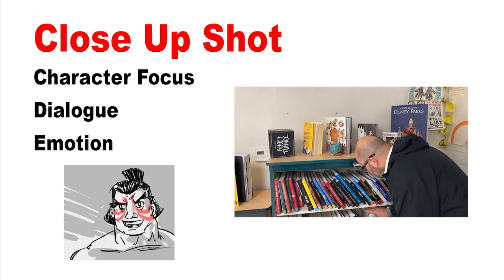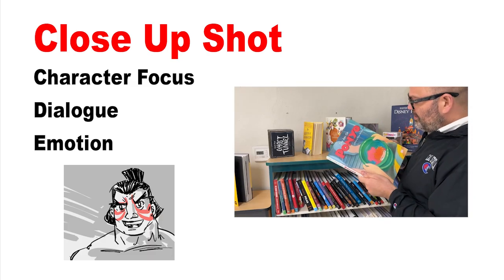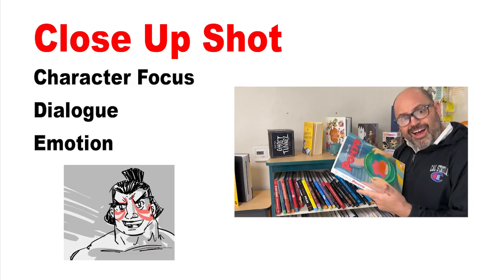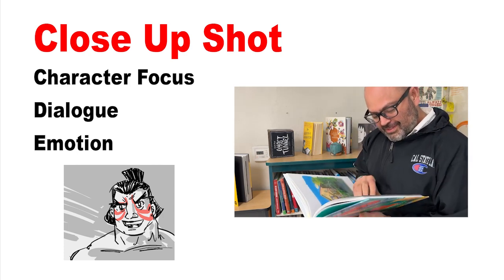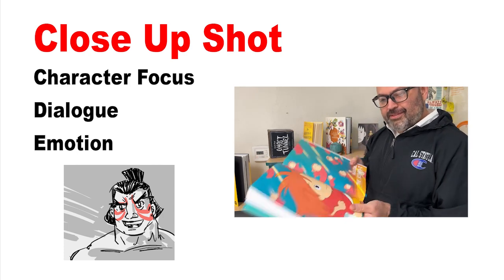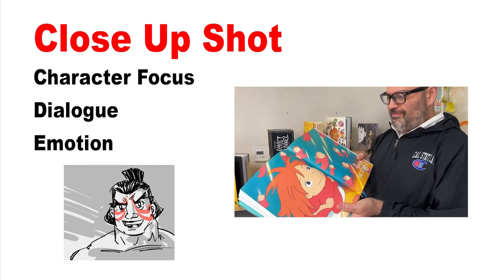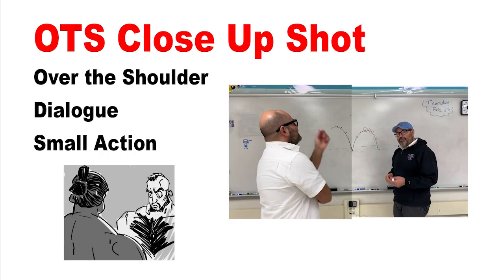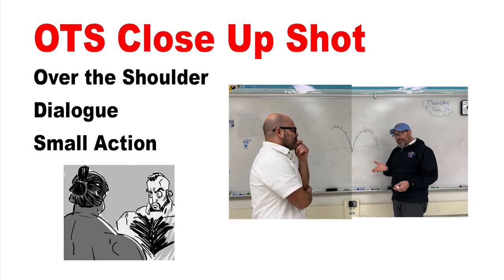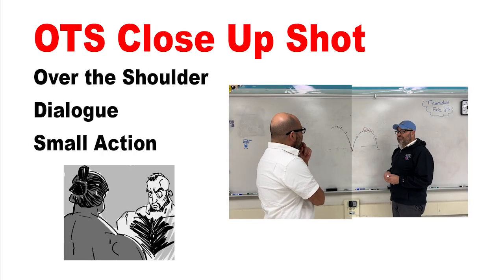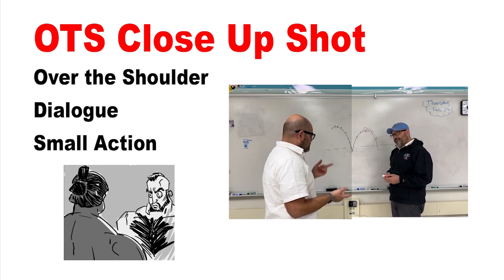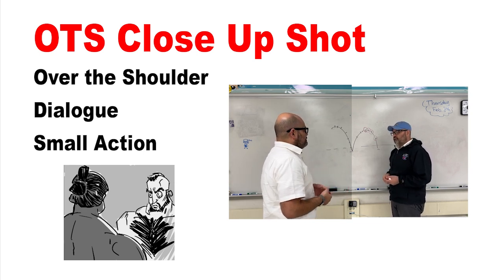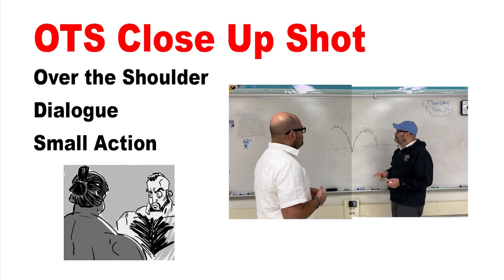Close-up shots are good for dialogue, emotion, and emphasis. It's a great shot to show the character and how they're feeling, and if you frame it right, the character can work with props. A variation of this is an over-the-shoulder shot, also called an OTS. This is great for conversations between two characters, but you don't want to overdo it and use it too much.